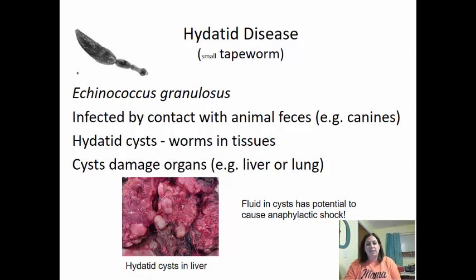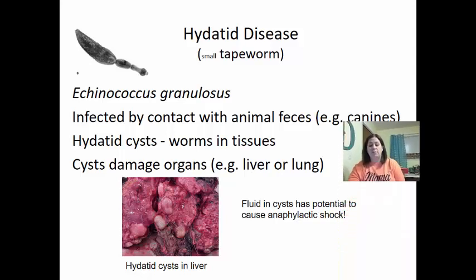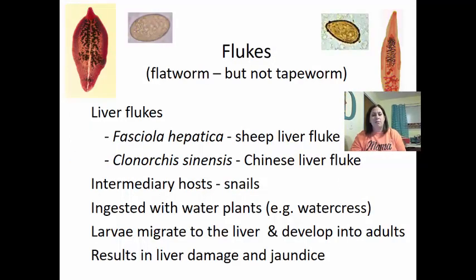Hydatid disease is caused by the small tapeworm Echinococcus granulosus, contracted through contact with animal feces, particularly from dogs. The hydatid cysts will break and produce worms in tissues. Cysts damage organs such as the liver and lungs, creating fluid-filled cysts that have the potential to cause anaphylactic shock — a severe allergic reaction. Liver flukes are flatworms but not tapeworms. They can come from sheep (Fasciola hepatica) or as Chinese liver flukes (Clonorchis sinensis), requiring a snail as intermediary host. Larvae are ingested with water plants like watercress, migrate to the liver, and cause liver damage and jaundice.